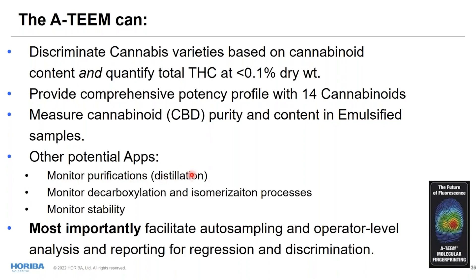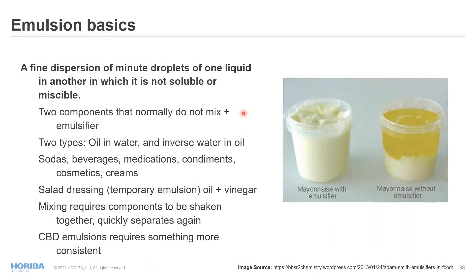Additional potential applications include monitoring cannabinoid distillation and purification processes via vacuum steam distillation, monitoring decarboxylation from CBDA to neutral CBD, monitoring isomerization to differentiate delta-9 and delta-8 THC, and monitoring stability and storage. These analyses are facilitated by our auto-sampling and operator-level software packages for reporting regression concentration information or yes/no discrimination decisions. I'll now pass to my colleague Sean Travers on particle size and emulsification of CBD.